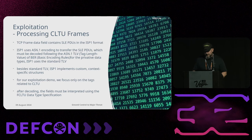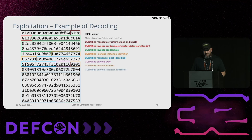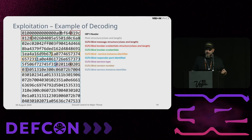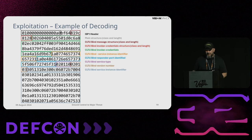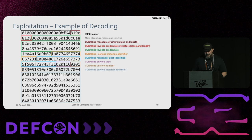This is an example of a bind operation between the mission control system and the ground station. We can see the ISP-1 header, then a main structure followed by additional structures, and somewhere in the middle we have the credentials. Those are additional elements which you can override or play with. Since there is no encryption, all those bytes mean exactly what they say.